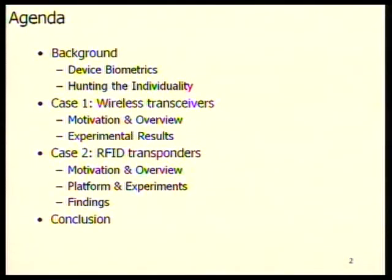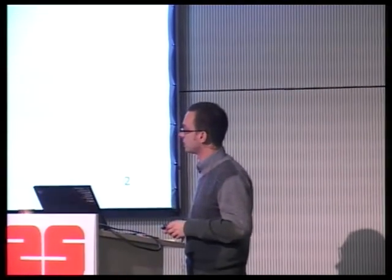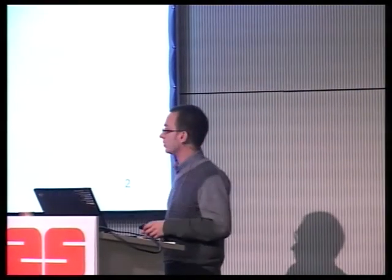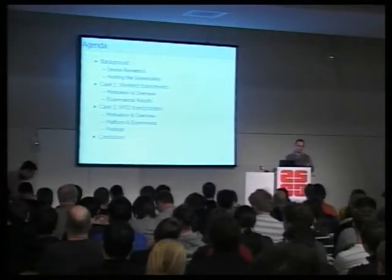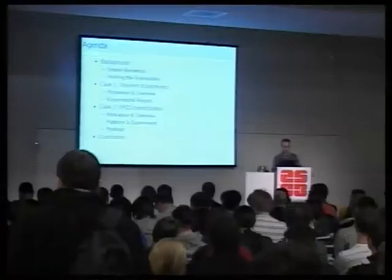What I will do first is give some background about device biometrics — can we find biometrics about network devices, any kind of devices — and then discuss the meaning of hunting the individuality and why we need this. Then I will have two use case studies. The first is about identifying wireless transceivers, which is more mature work, and the second is based on RFID transponders, where we have preliminary results. Then I'll have a conclusion.